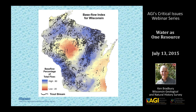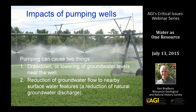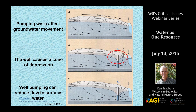Pumping groundwater from an aquifer near a stream or surface water body can cause two things: drawdown or lowering of water levels near the well, and a reduction of groundwater flow to nearby features. A well near a stream creates a cone of depression that diminishes flow to the stream. If pumping increases from Q1 to Q2, flow can even be reversed. The impact on the stream depends on the distance from the stream and the amount of pumping.